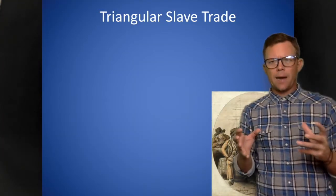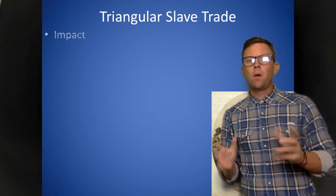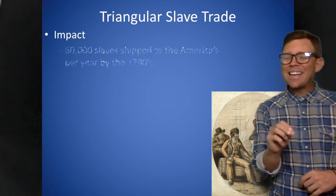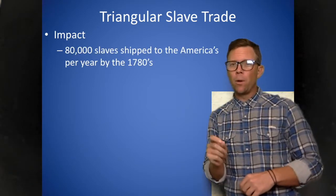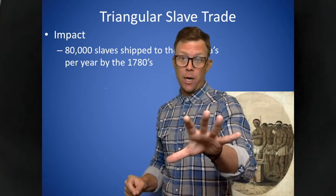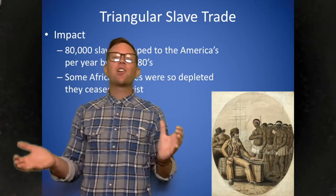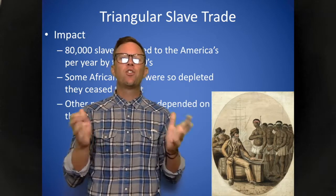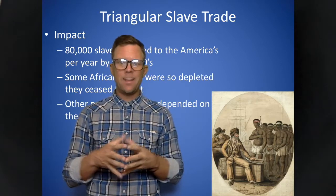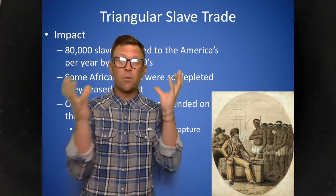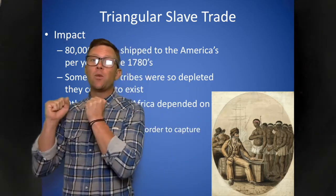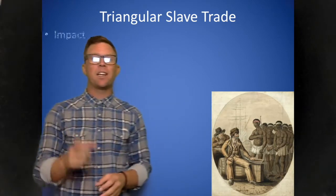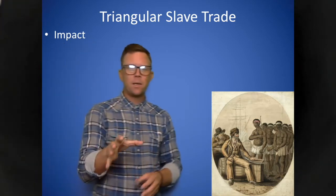What was the impact of this incredibly dark chapter in history? Well, by the 1780s alone, there were 80,000 people being shipped to the Americas per year. To put that in perspective, Dodger Stadium holds 56,000 people and the Staples Center holds 20,000 — that's still only 76,000. So if you filled up both Dodger Stadium and the Staples Center, you still haven't reached the number being shipped to the Americas on a year-by-year basis.